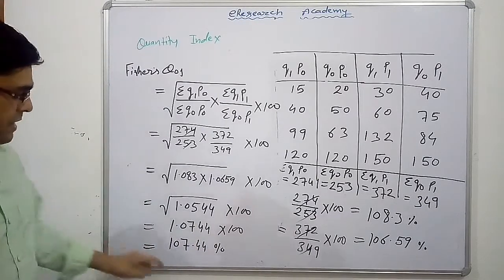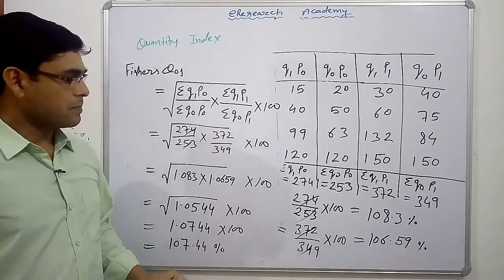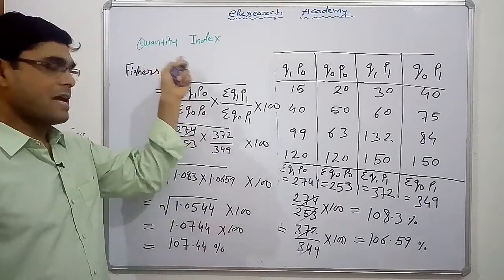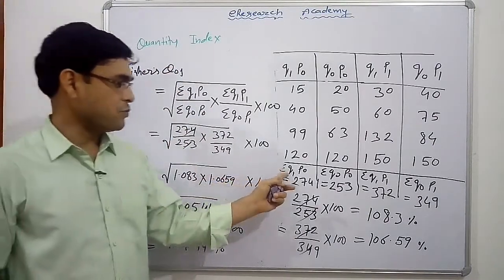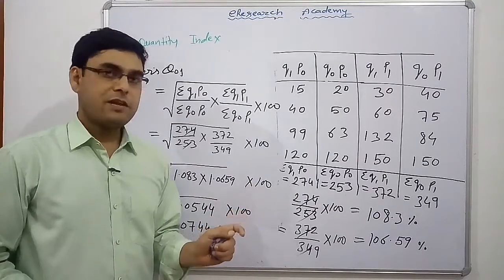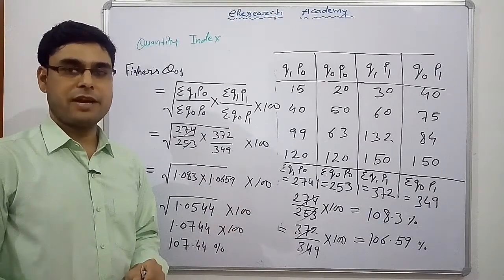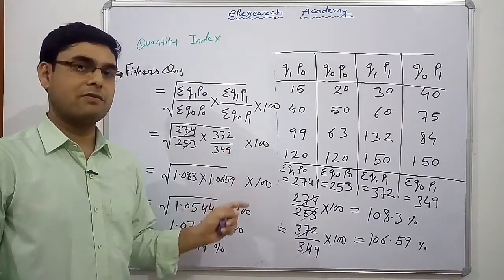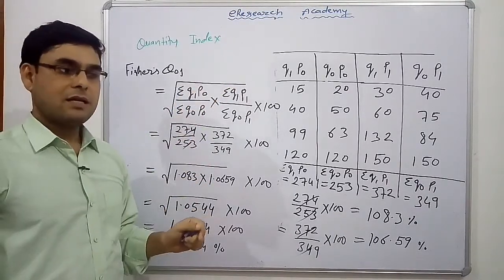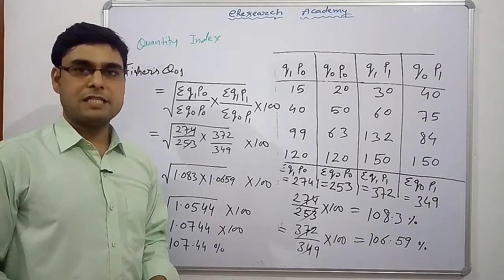So friends, this is the quantity index by Fischer's method. This is the technique to get the quantity index by all three statisticians. The only change is we replace Q with P and P with Q — the rest of the process is the same. Thank you very much for watching this video. Please subscribe the channel, share it with your friends, and give a valuable comment. In our next video, we will discuss the value index — the third type of index number. Thank you very much, have a nice day and God bless you.